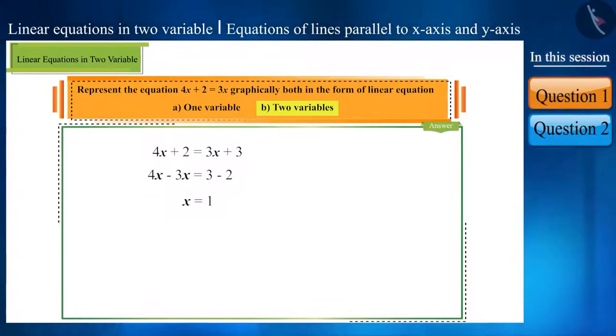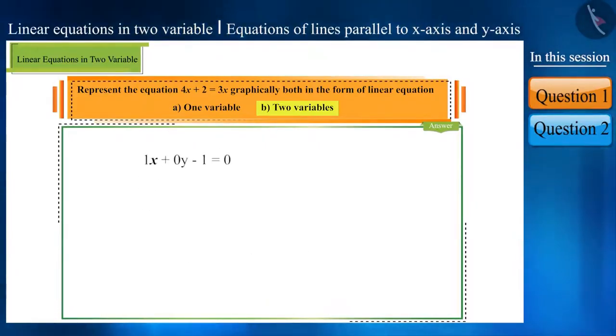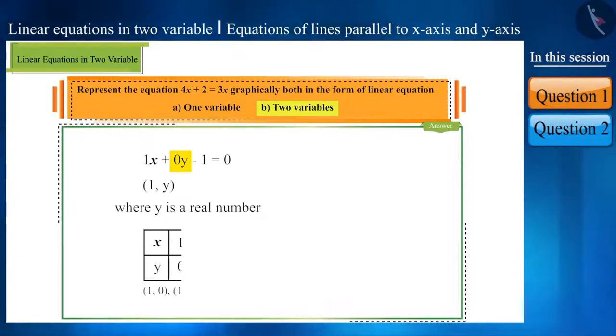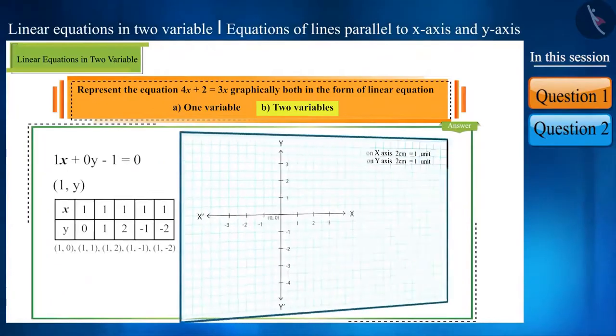We can represent this equation in the form of linear equations in two variables as 1x plus 0y minus 1 is equal to 0 and we will get infinite solutions for this. Here, on taking any value of y, it will ultimately become 0. All the solutions of this equation will be in the form of 1y where y is a real number. Here are some points which are the solution of this equation. Now, let's plot them on the graph.